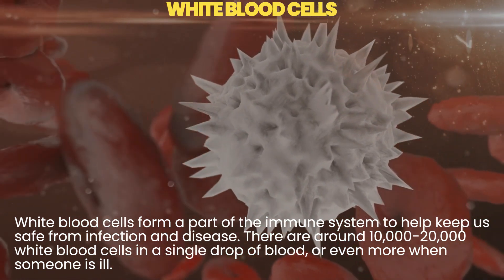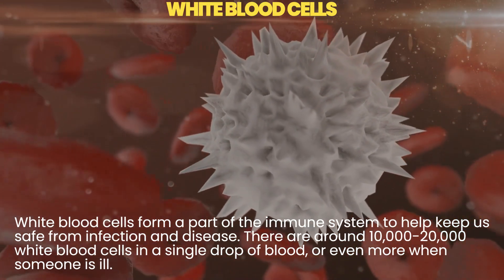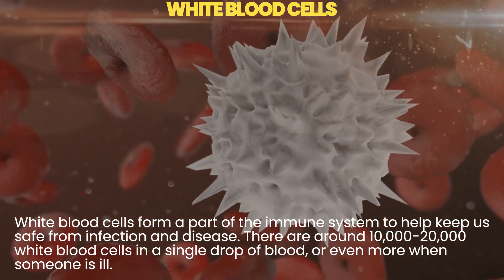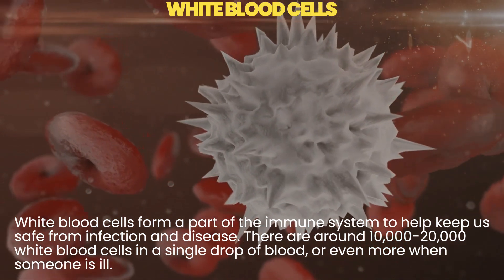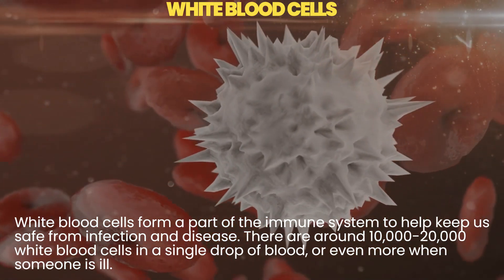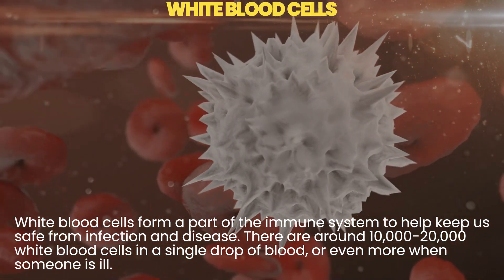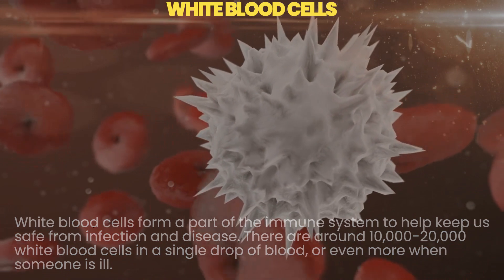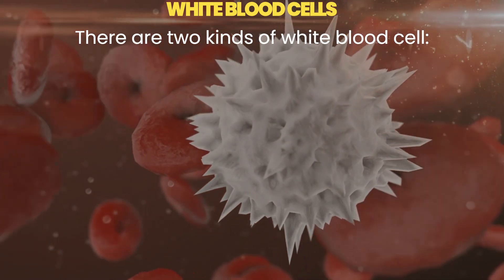White blood cells form a part of the immune system to help keep us safe from infection and disease. There are around 10,000 to 20,000 white blood cells in a single drop of blood, or even more when someone is ill. There are two kinds of white blood cell.